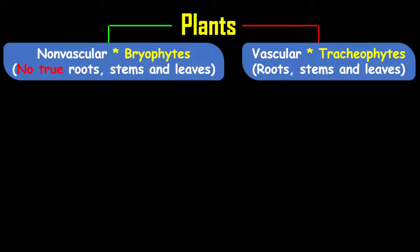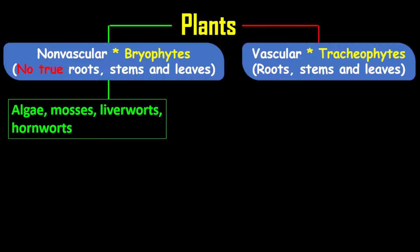Tracheophytes have true roots, true stems, and true leaves. Examples of nonvascular plants or bryophytes include algae, mosses, liverworts, and hornworts.